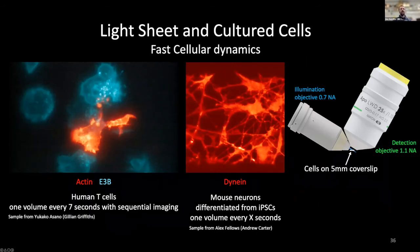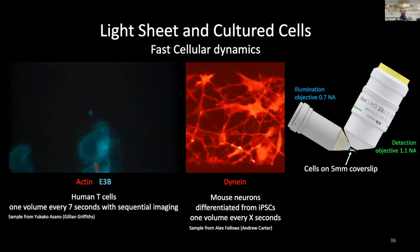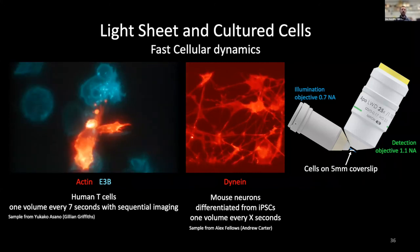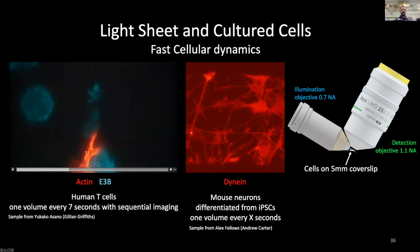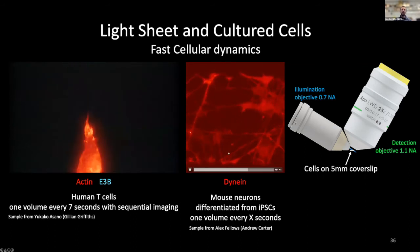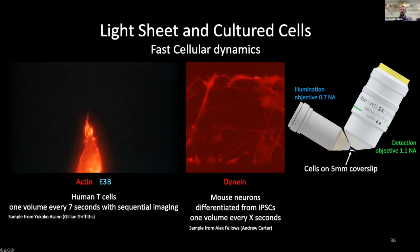Light sheet microscopy also enables very fast cellular imaging of fast cellular dynamics. On the left, human T-cells are shown with one volume acquired every seven seconds using sequential imaging. On the right, mouse neurons differentiated from induced pluripotent stem cells are imaged with one volume per second — very high speed. These were acquired on the sub-cellular field synthesis light sheet at the LMB, which uses different optics from the T-SPIM shown earlier.